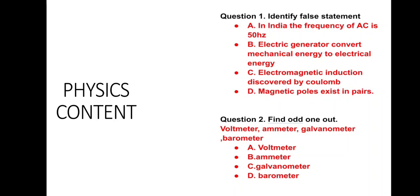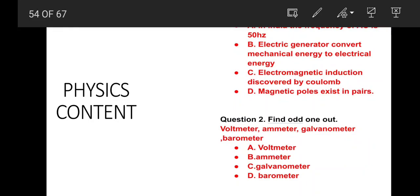Question number 1: Identify the false statement. Four statements are given. Option A: In India, the frequency of AC alternating current is 50 Hz. B: Electric generators convert mechanical energy into electrical energy. C: Electromagnetic induction discovered by Coulomb. D: Magnetic poles exist in pairs. The correct answer is option C — electromagnetic induction discovered by Coulomb — this is a false statement. Electromagnetic induction was discovered by Faraday and independently by Henry.